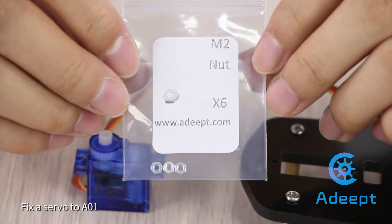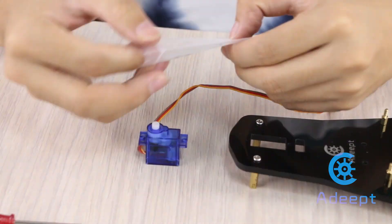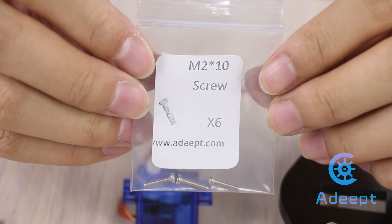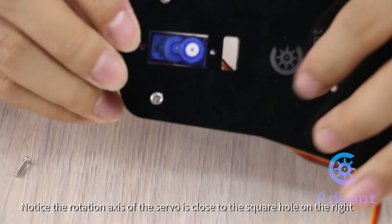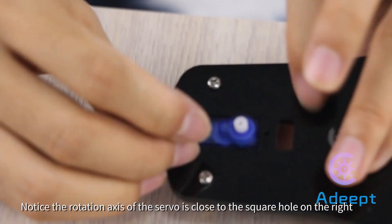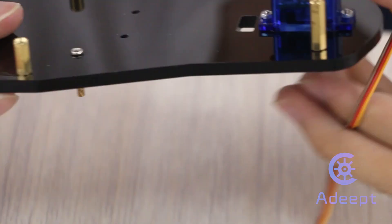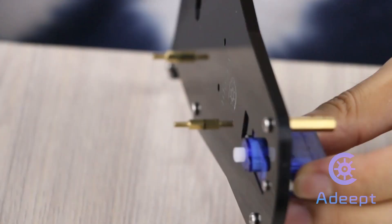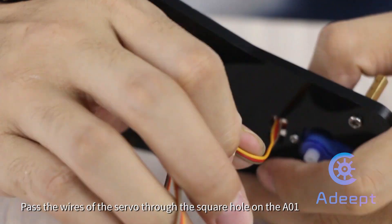Fix a servo to A01. Notice the rotation axis of the servo is too close to the square hole on the right. Pass the wires of the servo through the square hole on A01.